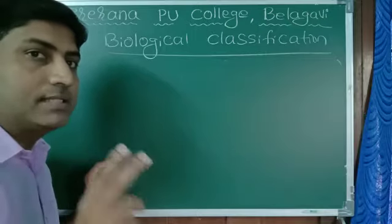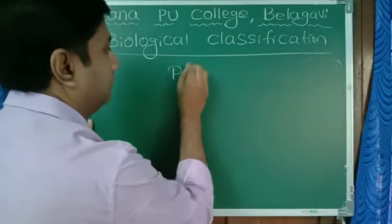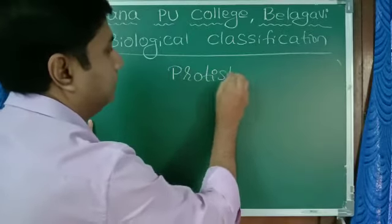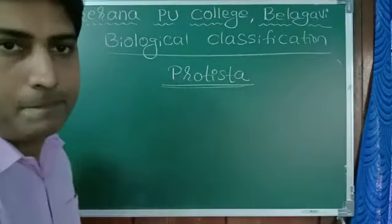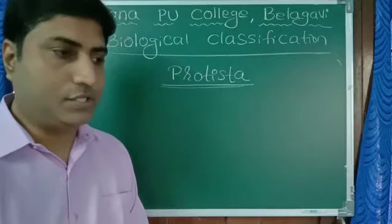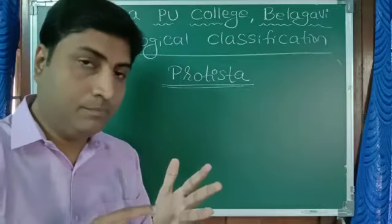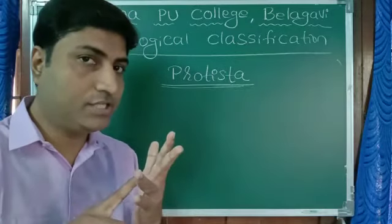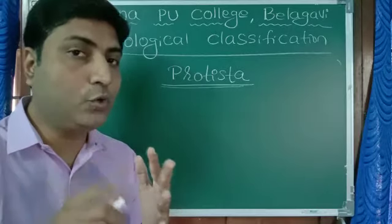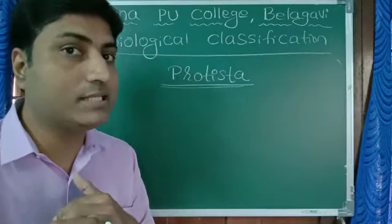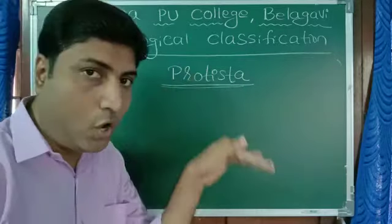We'll move on to second kingdom now, that is Protista. We have to remember, out of five kingdoms - Monera, Protista, Fungi or Mycota, Plantae, Animalia - I had told you that only first one is prokaryote, which is Monera. Monera is the prokaryote.